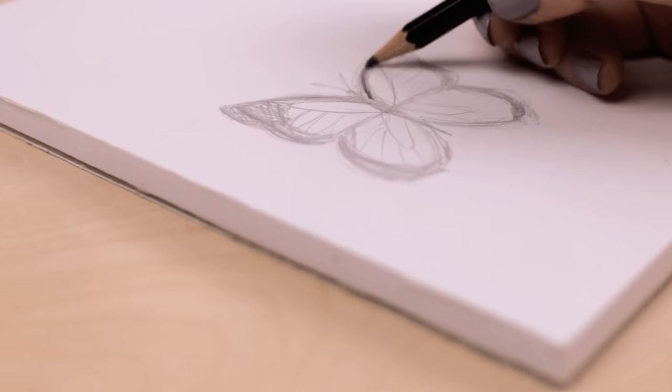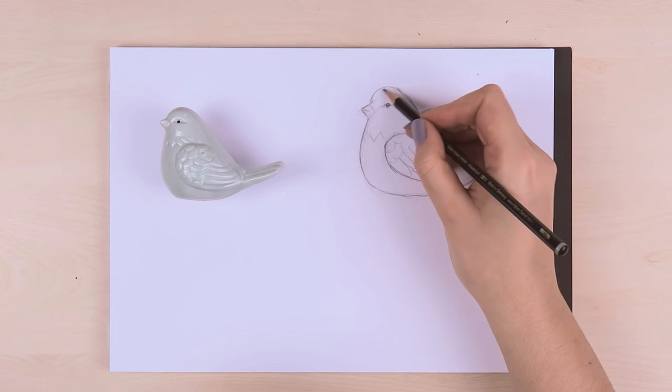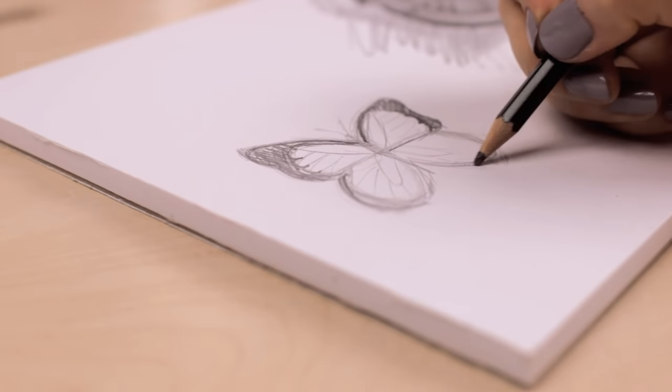Now, once you're happy with the overall sketch, you can now make it look more three-dimensional by shading it. There are different ways how you can do that.